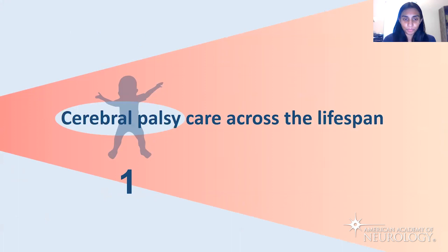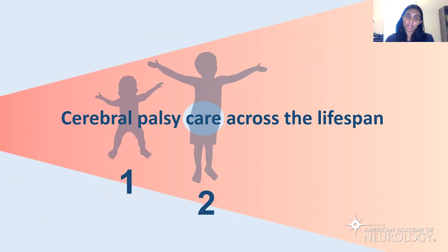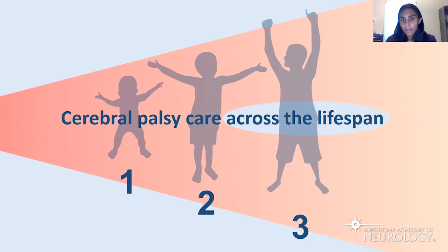I have no relevant disclosures. I'm breaking down this topic into three parts: first, I'll talk about what is cerebral palsy; next, I'll talk about what I mean by care — there's a very particular approach that I would encourage people to apply when caring for a person with CP; and then I'll talk about the value of this across the lifespan. Many people think about cerebral palsy as a pediatric disease, but it's not. People with cerebral palsy become adults with cerebral palsy, and they still need us.